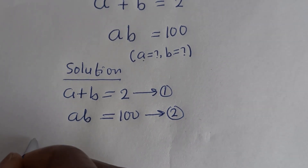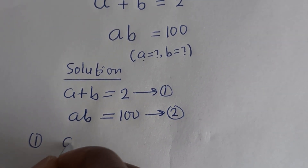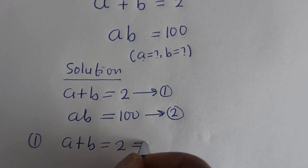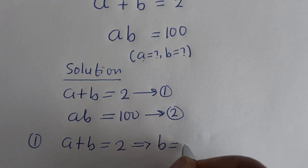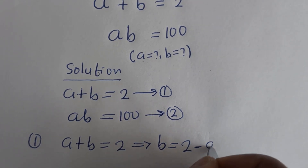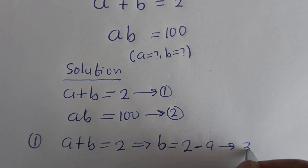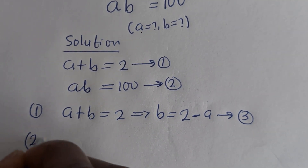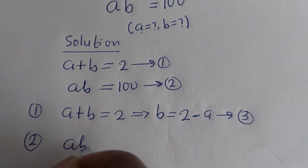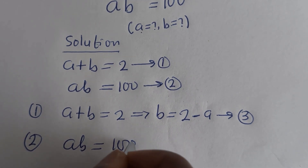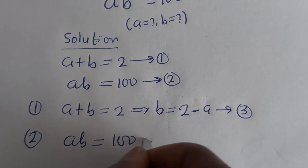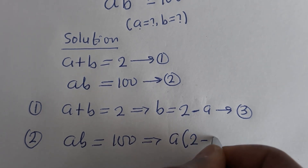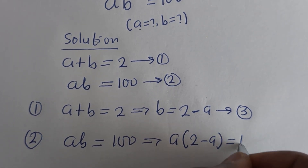From equation 1, A plus B is equal to 2, then B is equal to 2 minus A — let us call this equation 3. From equation 2, AB is equal to 100, and substituting equation 3 gives A bracket (2 minus A) is equal to 100.